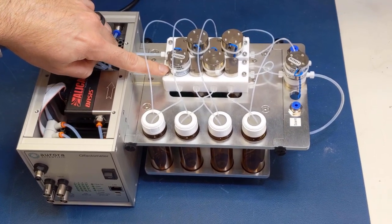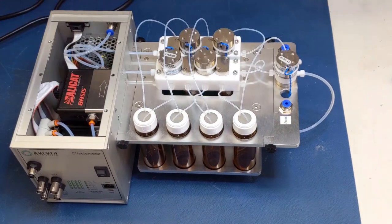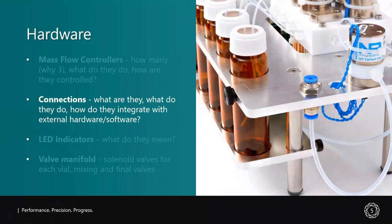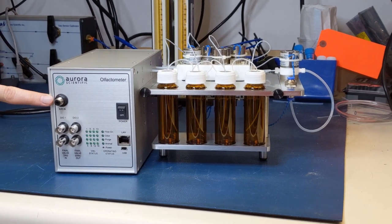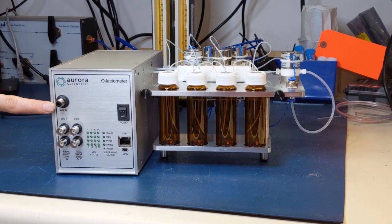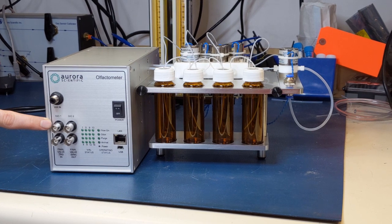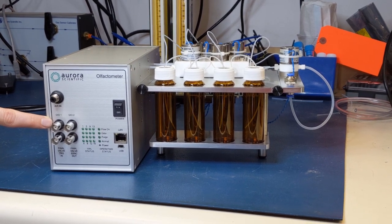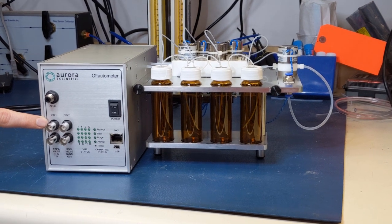The odorant is then mixed with the dilution line at the mixing valve prior to being released at the final valve. Now that we've discussed what's inside the box, let's focus on all those front and back panel connections and how you can utilize them to their full potential. Looking at the front panel, you'll see the air-end push fitting to connect your clean air source. Below that are your BNC connections, first of which is DIO1, an input that takes an external TTL signal to trigger the start of a sequence written in the 220A control software.